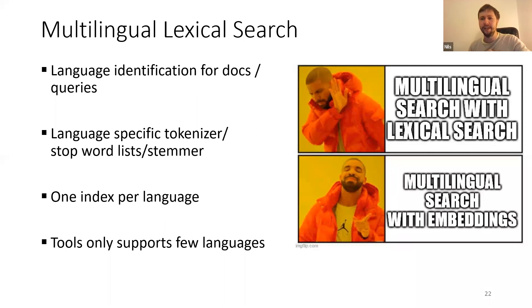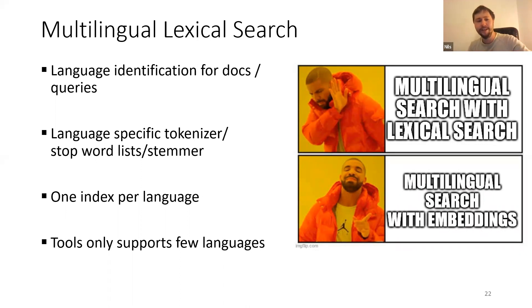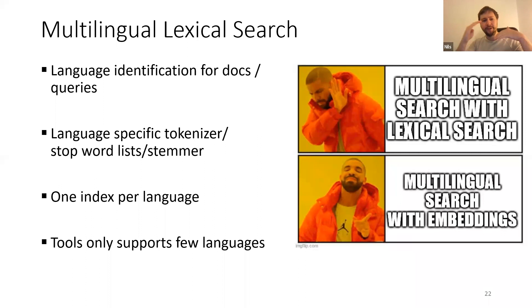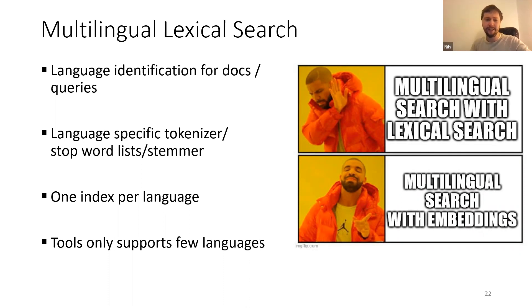For Chinese you need a different tokenizer than for English. Also, stop word lists must be different — in English you have certain stop words, but these are different for French, German, Chinese, Russian, Turkish, and Arabic. You also often do stemming, reducing words to their stem, like 'docs' goes to 'doc', and this is also language-specific. So for every language you need a different pipeline, different tokenizer, different stop words, different stemmer, and a different index.